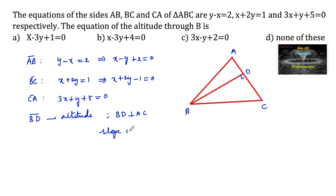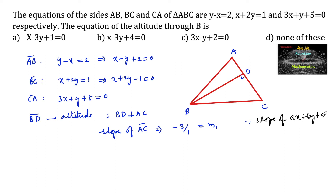Since BD is an altitude and is perpendicular to AC, let us find the slope of side AC. We know that the slope of a line ax plus by plus c equals to 0 is given by minus a divided by b. So the slope of AC, which is 3x plus y plus 5 equals to 0, is minus 3 upon 1, that is minus 3. Call this m1.